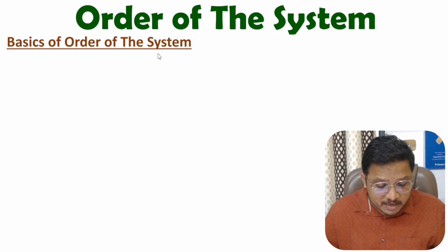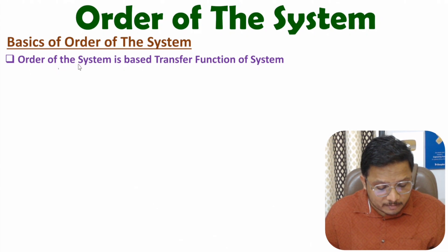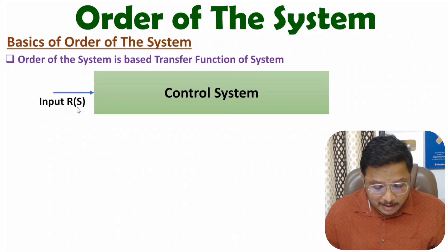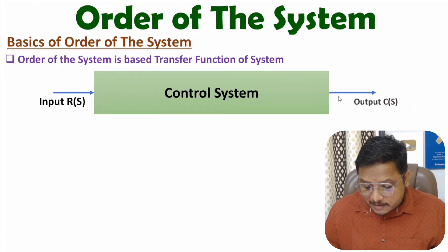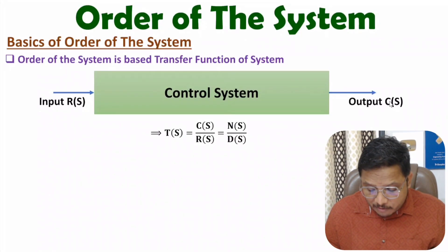Order of the system is based on the transfer function of the system. If you have the transfer function of the system, then you can easily identify the order. For example, if you have a control system where input is R(s) and output is C(s), then the transfer function is the ratio of output to input — C(s) divided by R(s).